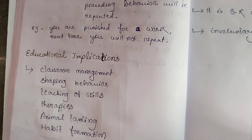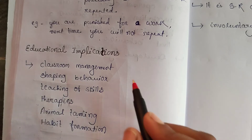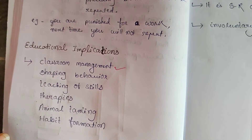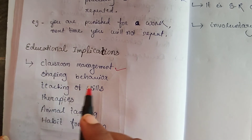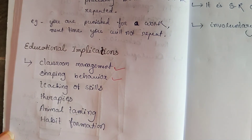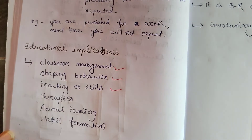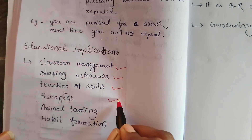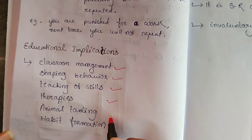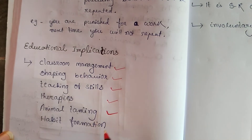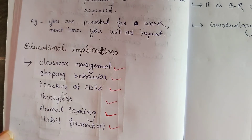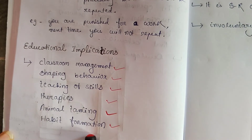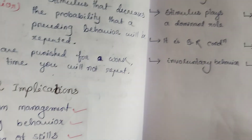Now let's look at the educational implications of operant conditioning. It is used for classroom management, shaping the behavior of a child, teaching of skills, techniques used for therapies, animal taming, and good habit formation.